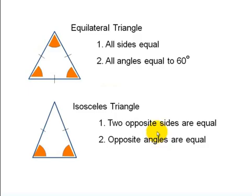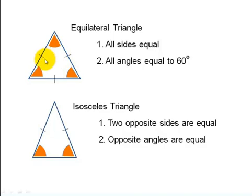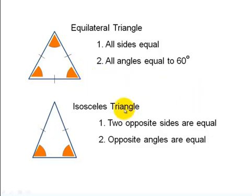Now let's look at the types of triangles. The first is the equilateral triangle — 'equi' means equal — so all sides are equal, as shown by the tick marks on each side. Because all sides are equal, all three angles are also equal, each measuring 60 degrees. The next is the isosceles triangle, in which two sides are equal, marked with the same tick marks, indicating those two lengths are equal.